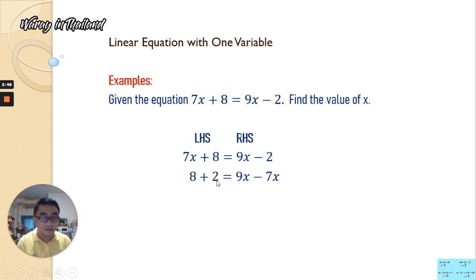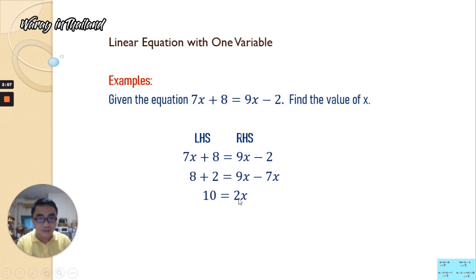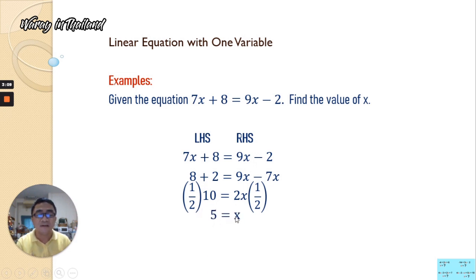We combine like terms. We have 8 plus 2 is 10, and 9x minus 7x is 2x. Now we divide both sides by 2. We can simplify: 10 divided by 2 is 5. So we have x equals 5. Therefore, the value of the variable x is equal to 5.